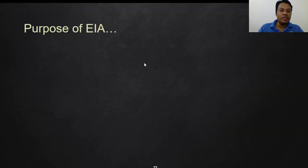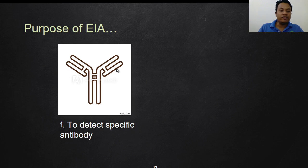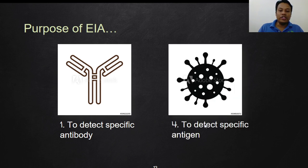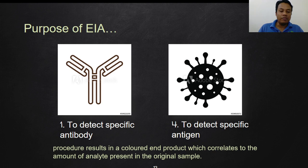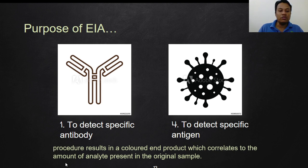The purposes of EIA are: first, to detect a specific antibody or specific antigen; and additionally, to determine the amount of analyte — the amount of antibody or antigen — in the patient. This goes beyond just positive or negative results. By using EIA, we can detect how much antibody is being produced or how much antigen is in the patient's blood, indicating how severe an infection might be.